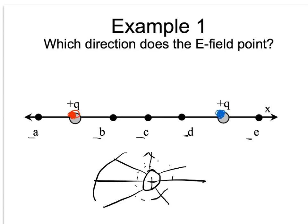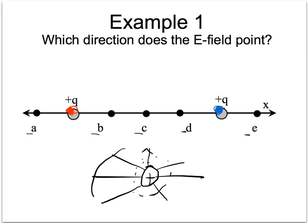Let's look first at point A. The red Q will cause a field line to the left because field lines point away from positive charges. And because that charge is close to point A, the red Q will cause a pretty strong field.